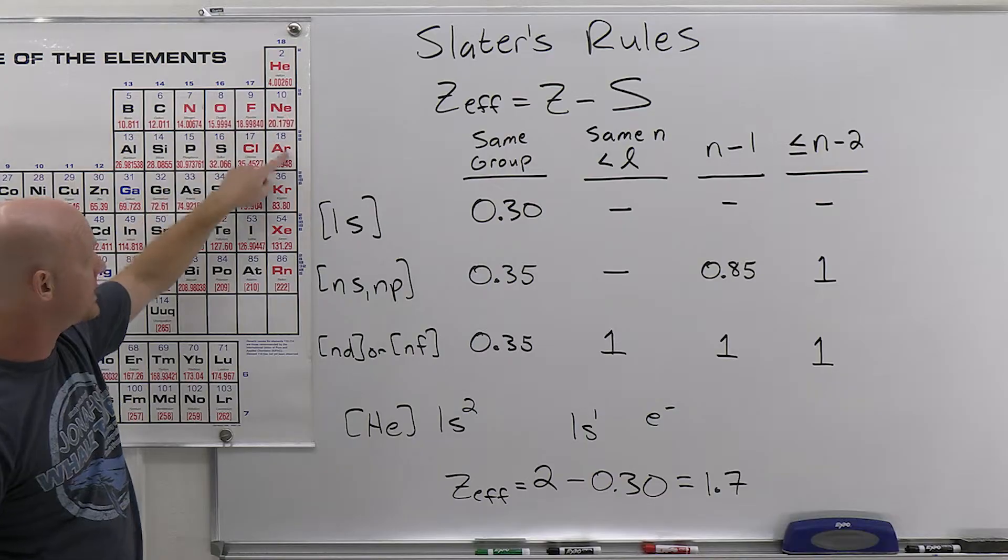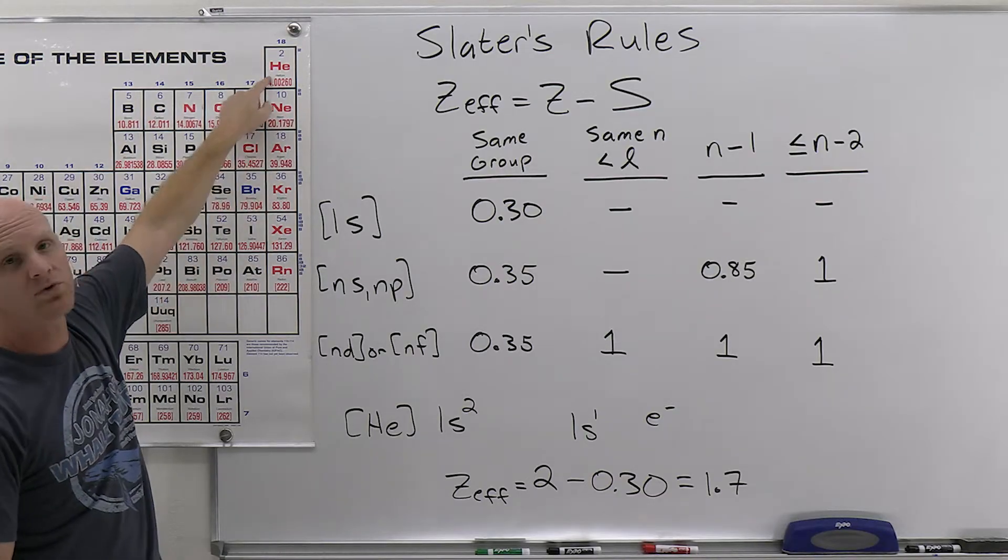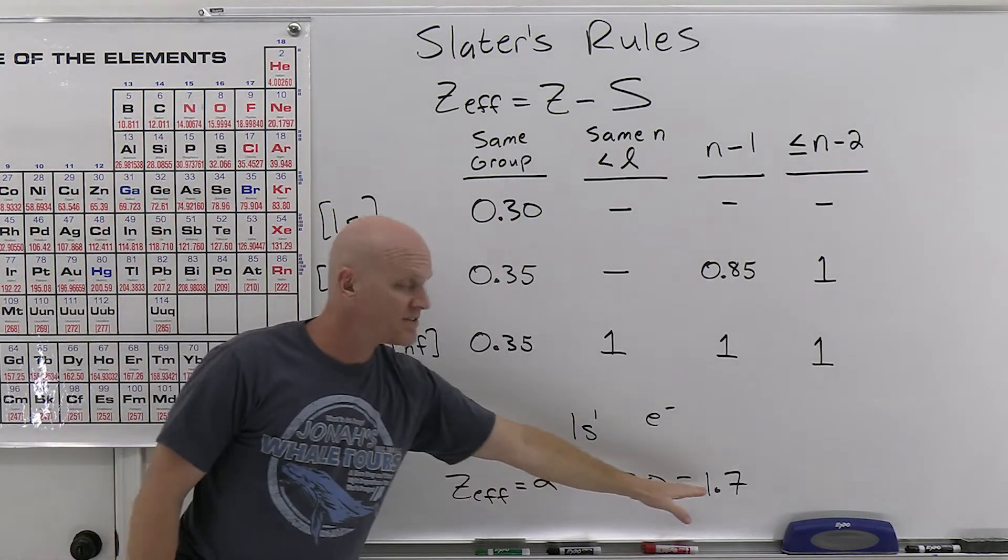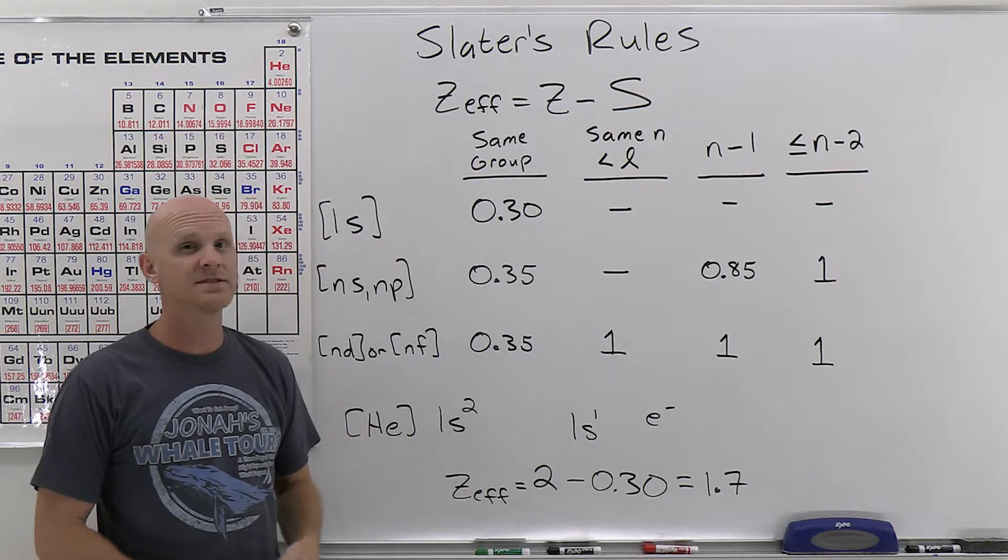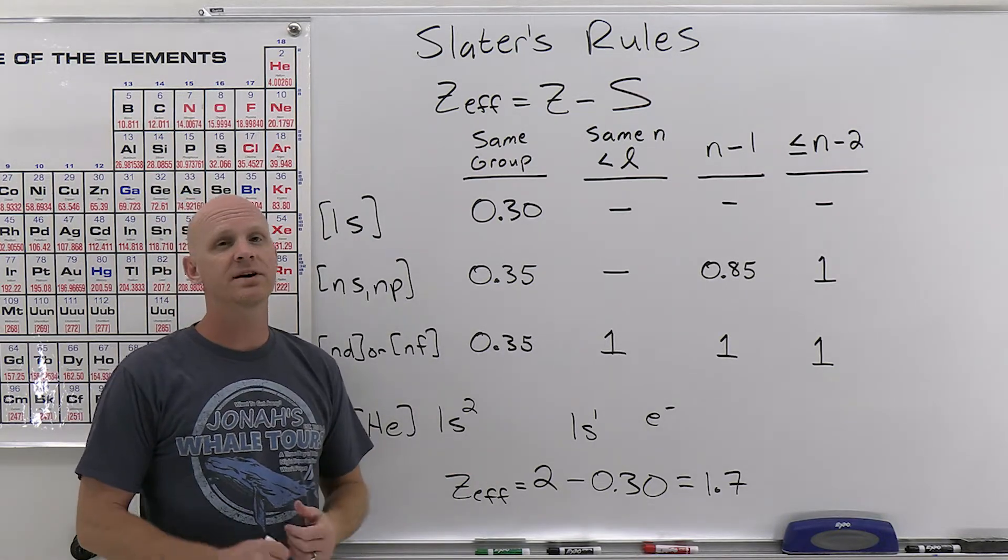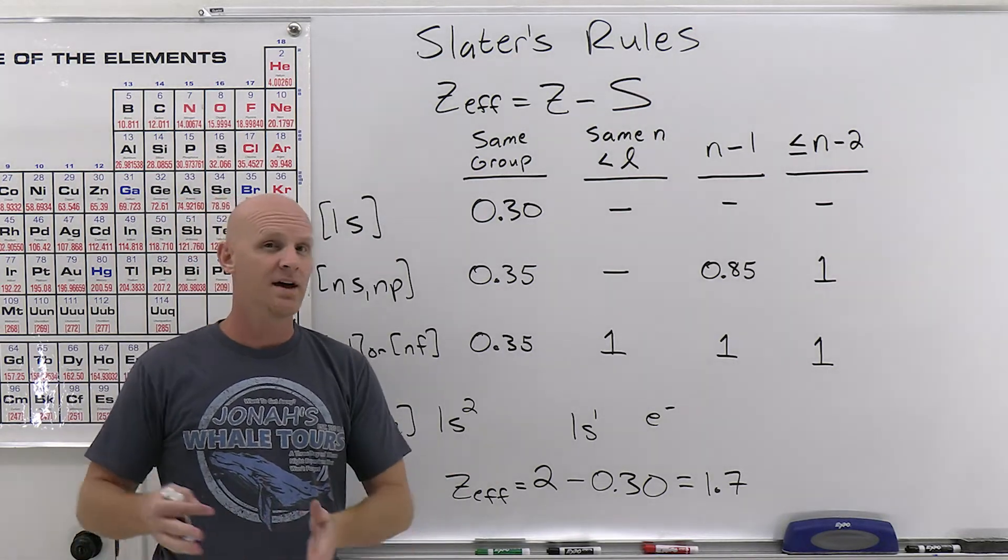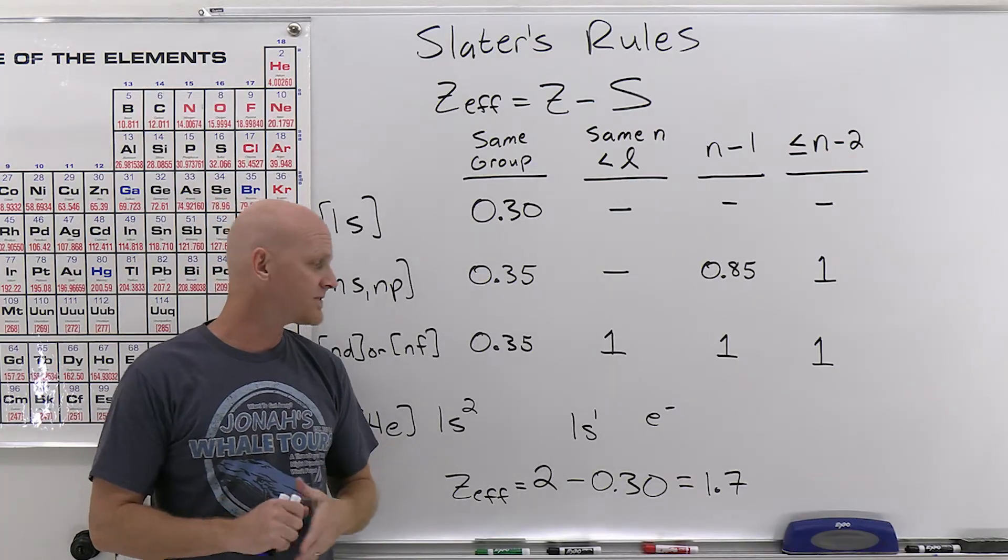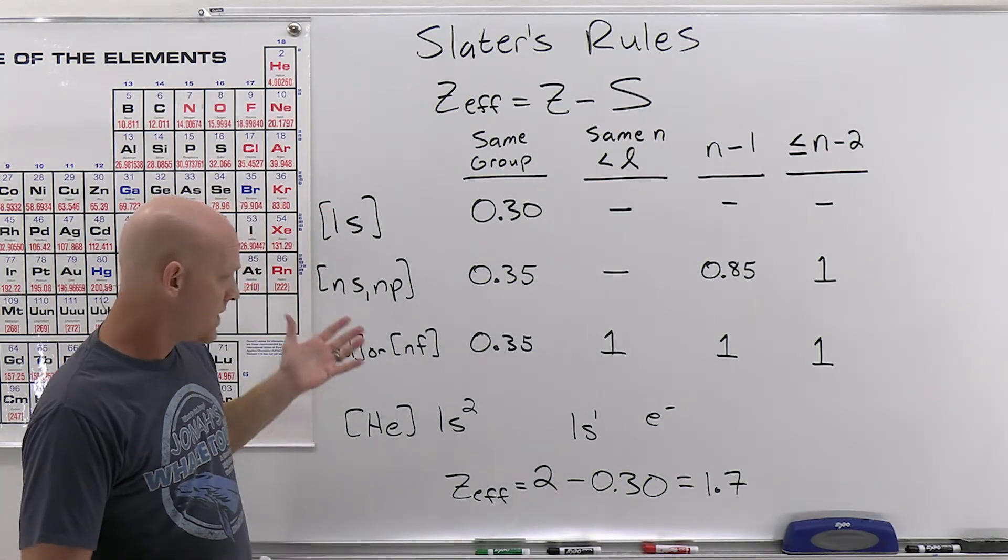For the other noble gases, it would have been plus 8 in the last lesson, but helium just would have been plus 2. Well, we found out it's actually only plus 1.7, so the attraction of the valence electron for the nucleus is not as great as we would have predicted in the last lesson. Okay, so that's helium. Let's make this a little more challenging here.